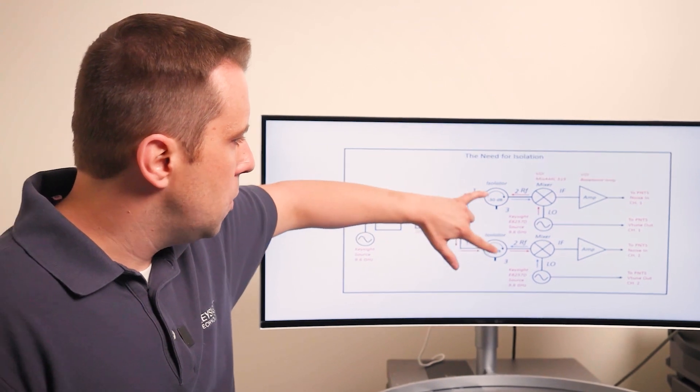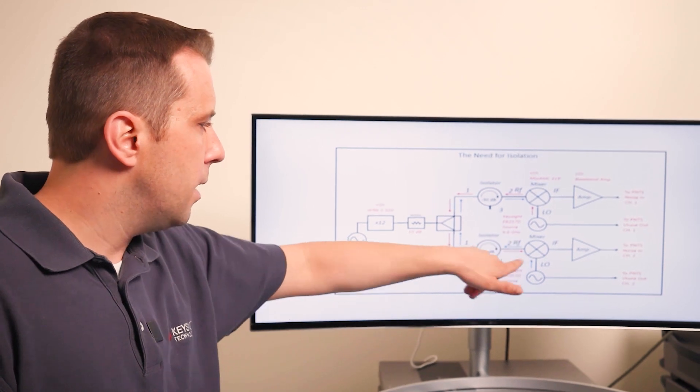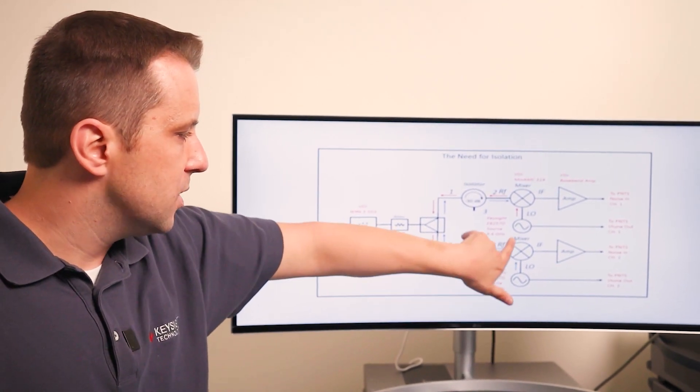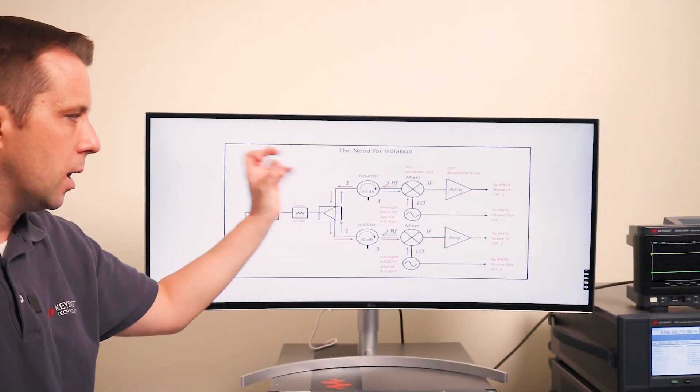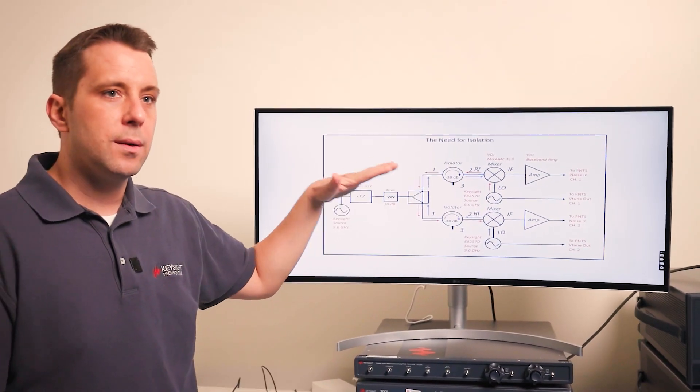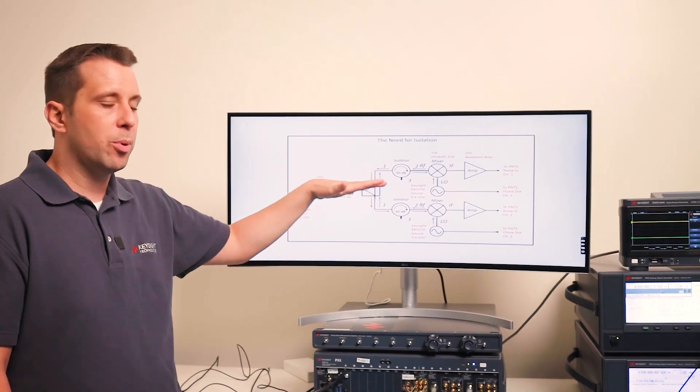You'll also notice there's two 30 dB isolators here. The reason for the isolators is to prevent leakage from the reference source in channel 2 from leaking over into channel 1 and vice versa. Otherwise you'll get a false floor that's called a correlated floor that's not the true DUT performance.